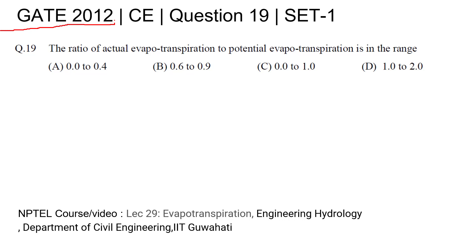GATE 2012 civil engineering question number 19: the ratio of actual evapotranspiration to potential evapotranspiration is in the range of? For this question you can refer to this NPTEL video.